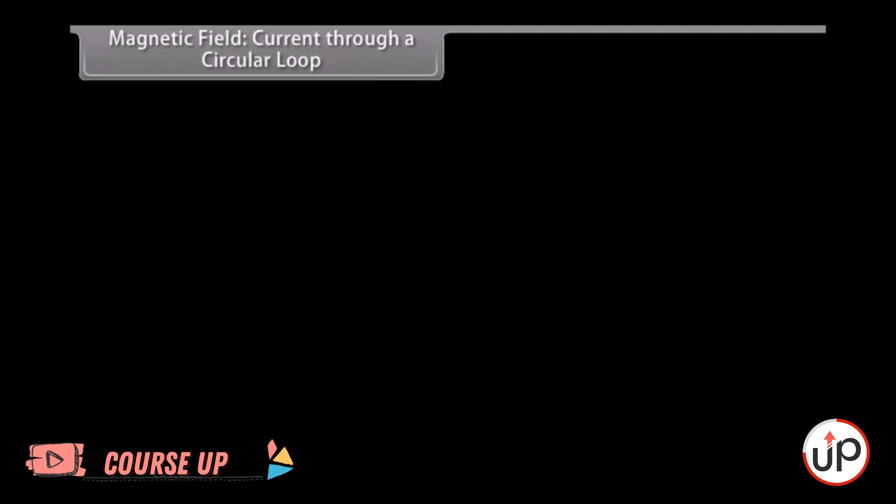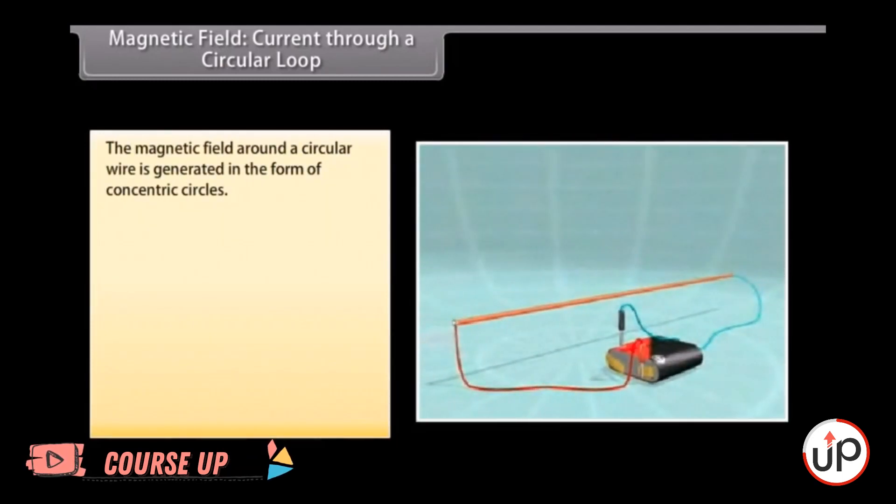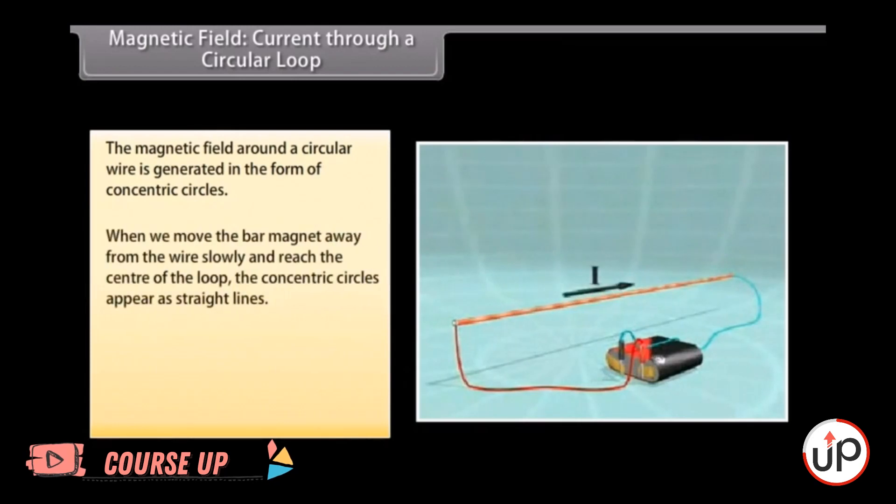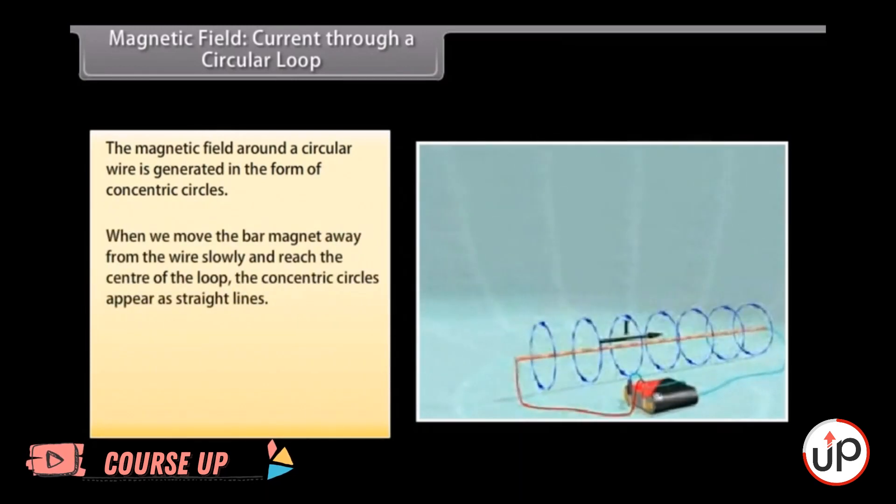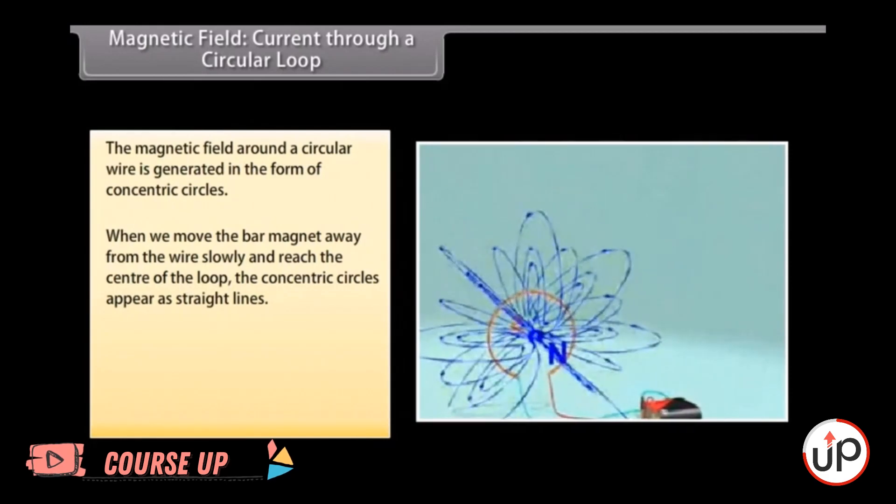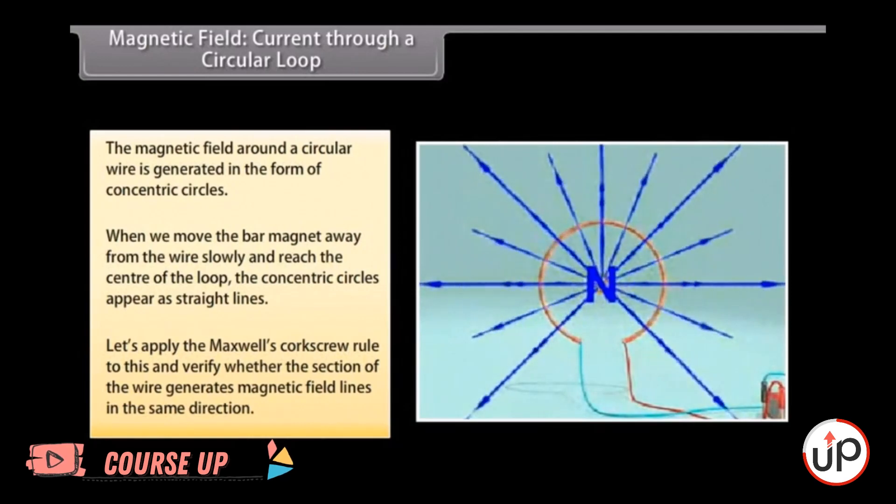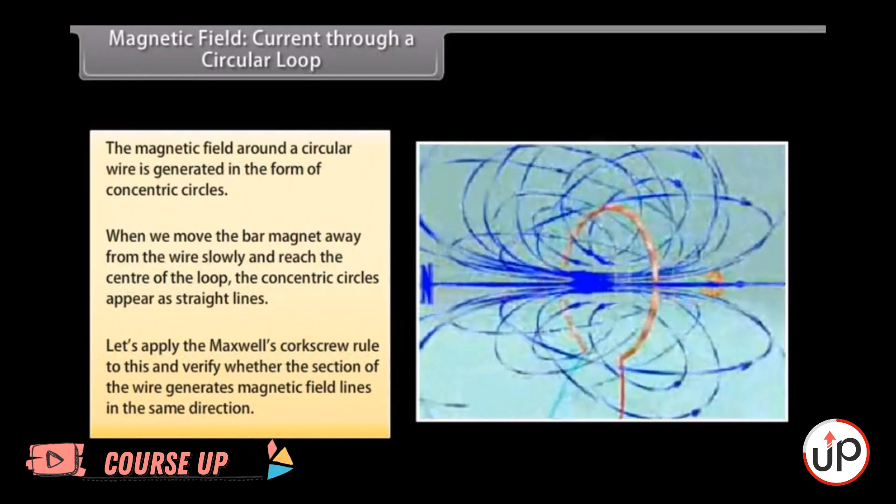Magnetic field current through a circular loop. Let us now look at what happens when the wire through which we passed the current is placed in a circular manner. The magnetic field around it is generated in the form of concentric circles. Try moving the bar magnet away from the wire slowly. By the time we reach the center of the loop, the concentric circles appear as straight lines. The entire magnetic field appears as a straight line. Now try applying Maxwell's corkscrew rule to this and check whether every section of the wire is able to generate magnetic field lines in the same direction.